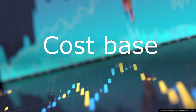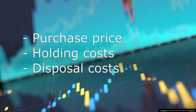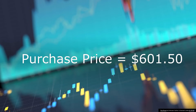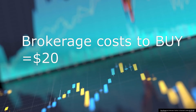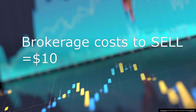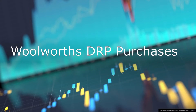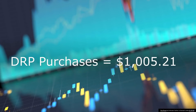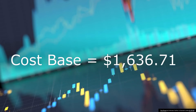Step 2: Work out your cost for the asset. Your cost base is what it costs you to acquire the asset plus any other costs you had to acquire it, hold it and dispose of the asset. If I bought 50 shares in Woolworths 20 years ago for $12.03 per share, I would have paid $601.50. I also paid $20 of brokerage to buy the shares initially and another $10 in brokerage to sell them. As I participated in the Woolworths Dividend Reinvestment Plan or DRP for over 20 years, I acquired another 50 shares at varying prices totaling $105.21, which is also added to my cost base. My total cost base would be $1,636.71.